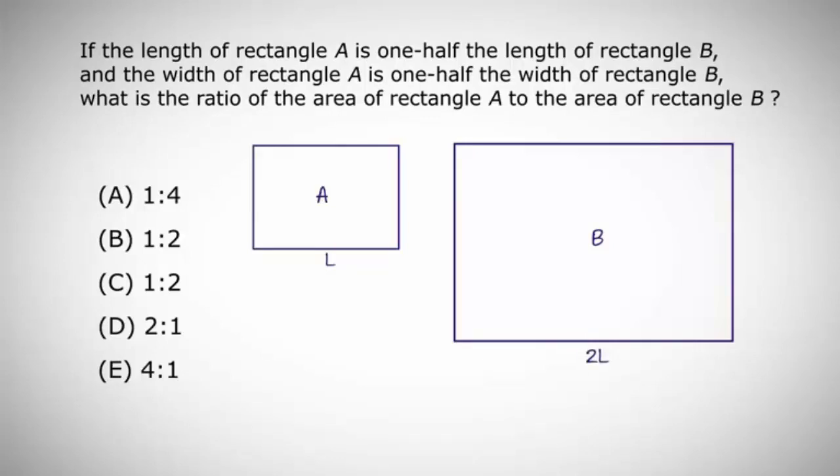Similarly, let's call the width of rectangle A, W, and the width of rectangle B, 2W. Now that we have our sides labeled, let's calculate the area of each rectangle.